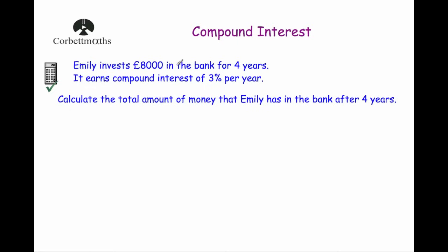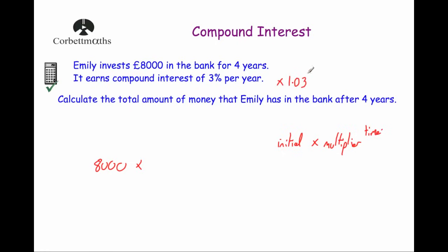Emily invests £8,000 in the bank for four years and it earns compound interest of 3% per year. Calculate the total amount Emily has after four years. Using the formula: the initial is £8,000. The multiplier for a 3% increase is 1.03, because it goes from 100% up 3% to 103%, which as a decimal is 1.03. Watch the Corporal Maths video on multipliers if you need to.